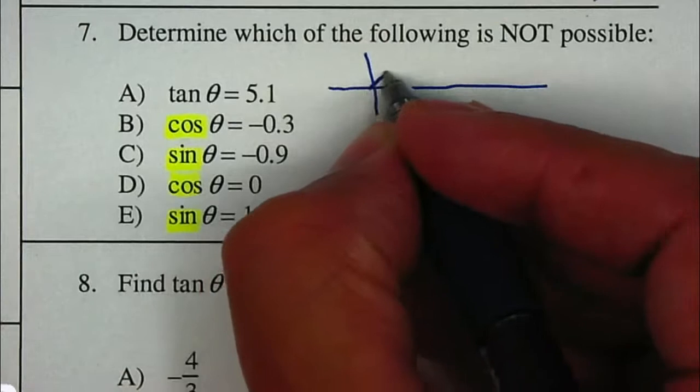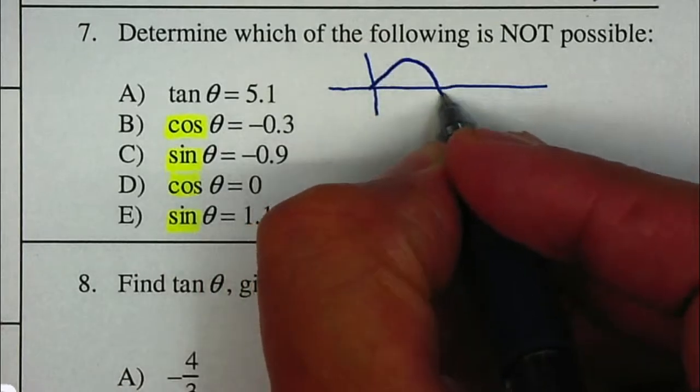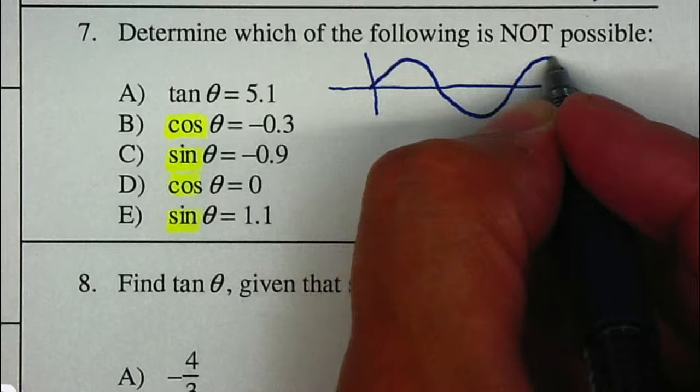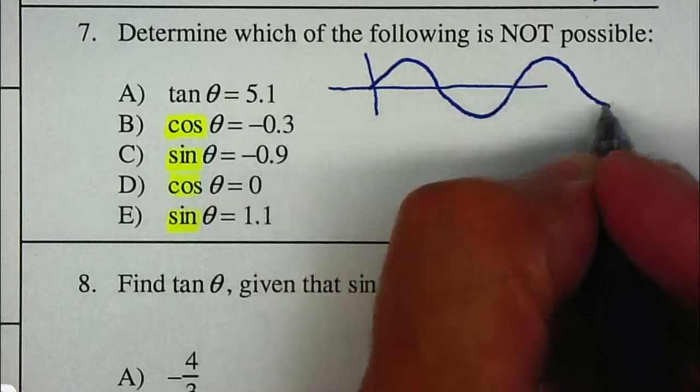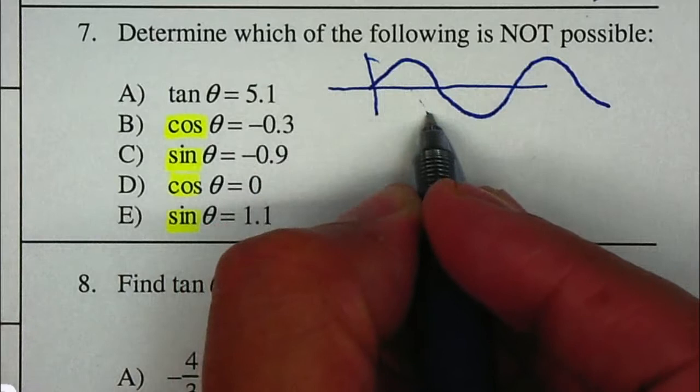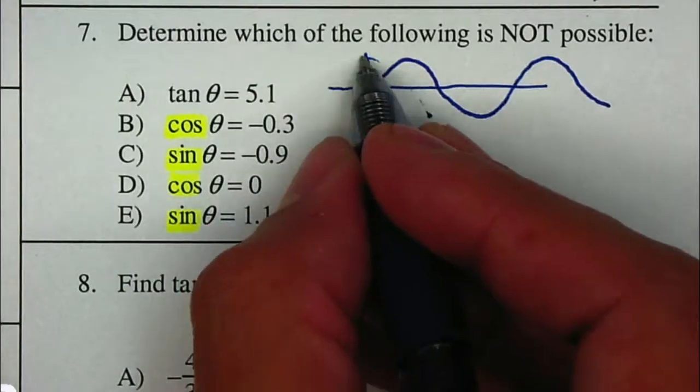The highest they can go is to 1 and the lowest is negative 1. The same thing applies to cosine, so the highest is 1 and the lowest is negative 1.